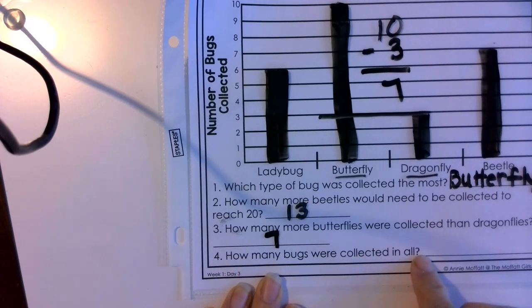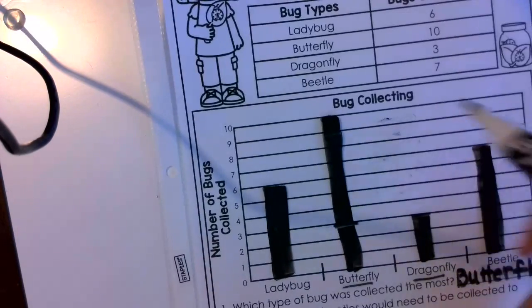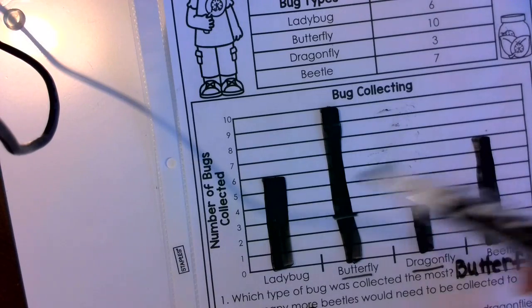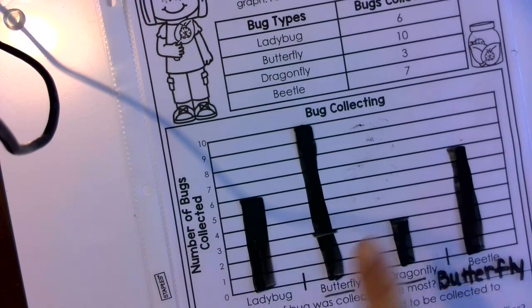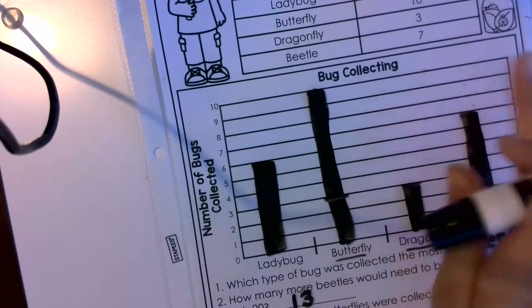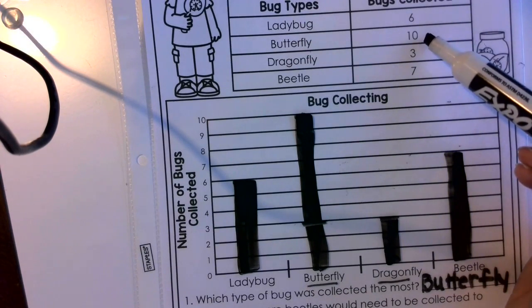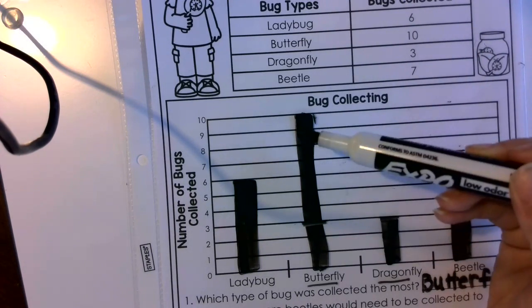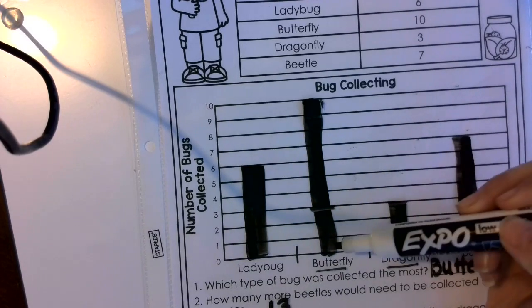How many bugs were collected in all? They want to know how many bugs were collected all together. So we have to add or count up how many there are altogether. The easiest way would be to count up all of your bugs using your graph. Or you could go up and count with your numbers and create an addition sentence. The easiest way for me is to take the largest number, which is 10, put that in my head, and then count all of the others and add them to it. So starting at 10...